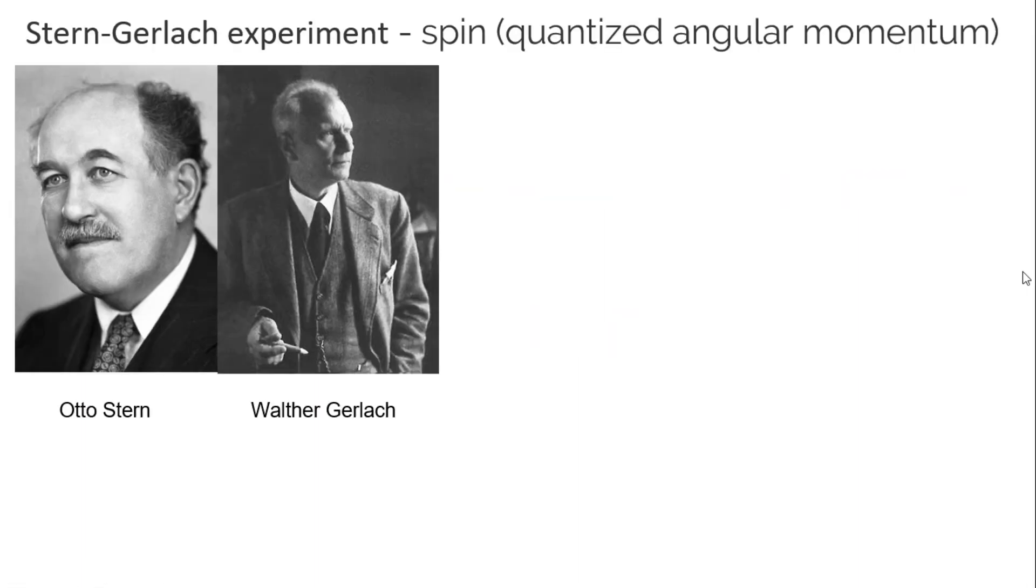Today we're going to talk about the Stern-Gerlach experiment, which really was the first time something called spin was shown. They didn't call it spin, that didn't come until much later, but they realized it was quantized angular momentum, which I'll explain a whole lot later.